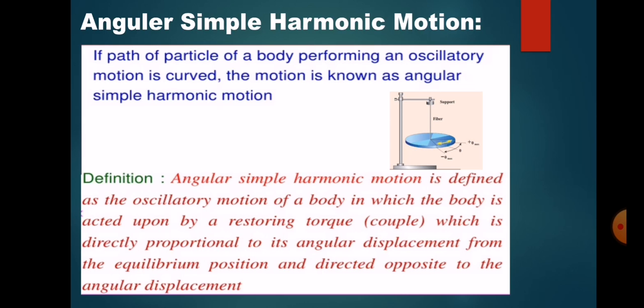Angular simple harmonic motion is defined as the oscillatory motion of a body in which the body is acted upon by a restoring torque — a couple of force — which is directly proportional to its angular displacement from the equilibrium position and directed opposite to the angular displacement.